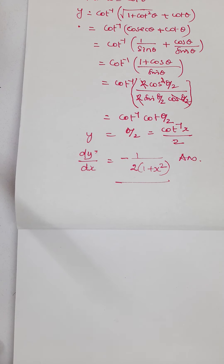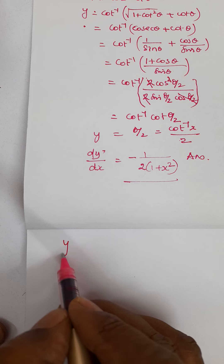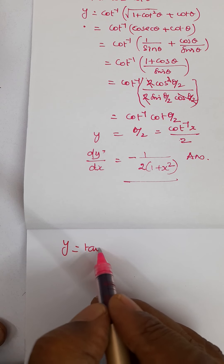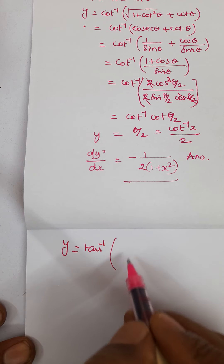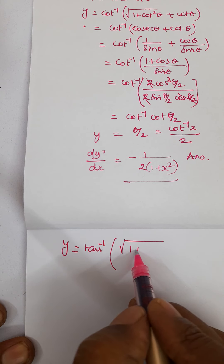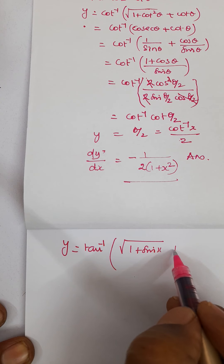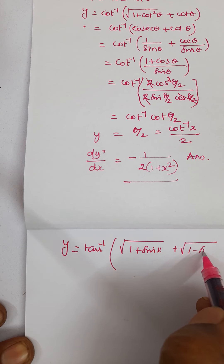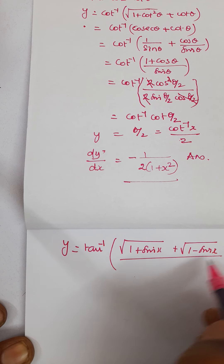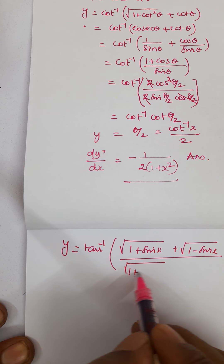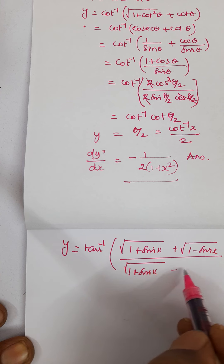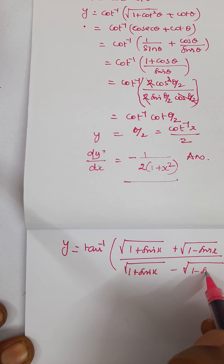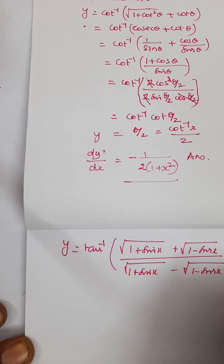Today we are going to see another interesting problem. y is equal to tan inverse of root of 1 plus sin x plus root of 1 minus sin x, divided by root of 1 plus sin x minus root of 1 minus sin x. Find dy by dx.